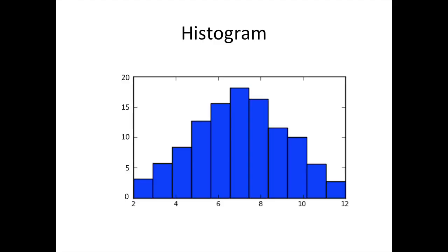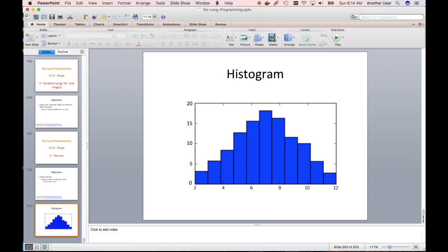I'm just eyeballing the values, so don't take it too seriously if I'm a little off. You can use any numbers you want. Four looks like nine, five I'll say is 13, six is 15, seven is 18, eight is 16, nine is 14, ten is 10, eleven is 6, and twelve is about 2.5 — but I'm going to use integers instead of floats for this histogram.